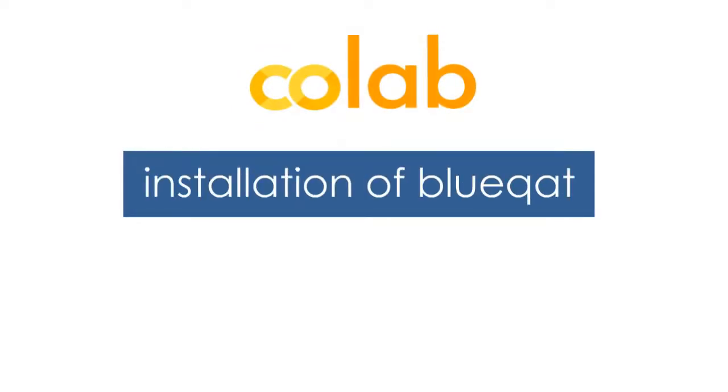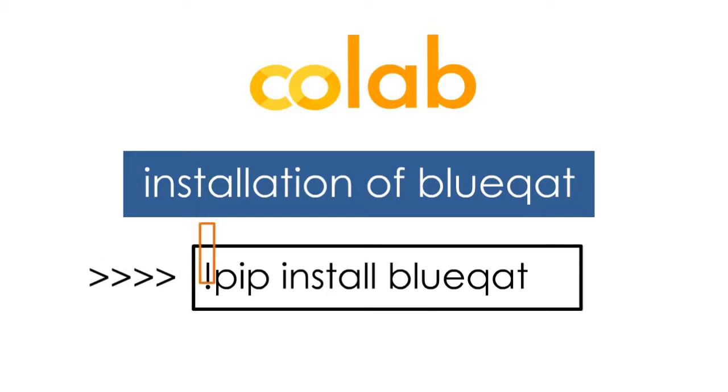We will be doing the coding on Google Colab. Like we did in the previous video, we will be starting with the installation of BlueCat. Type the code, exclamation mark pip install BlueCat in order to install BlueCat.